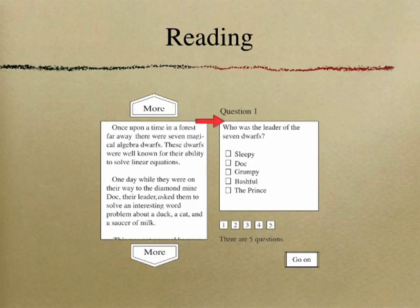Questions about the reading will appear in a box on the right side of the screen. To mark your answer, click on the open box next to your selection. You can go to the next question or back to a previous question by clicking on the numbered boxes below the question box.